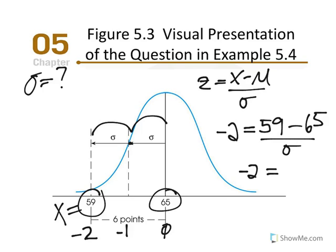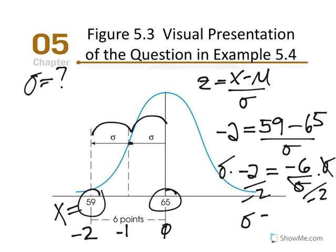Simplifying: negative 2 equals negative 6 divided by standard deviation. To isolate standard deviation, we multiply both sides, then divide by negative 2. Standard deviation equals negative 6 divided by negative 2, which gives us 3 points. So one standard deviation equals 3 points.